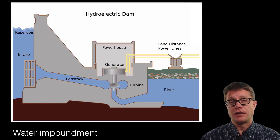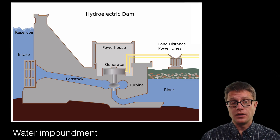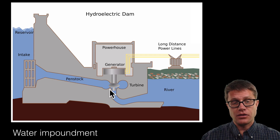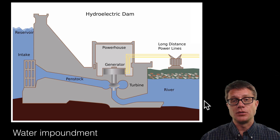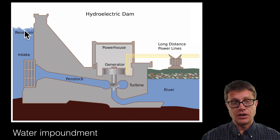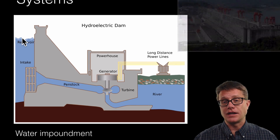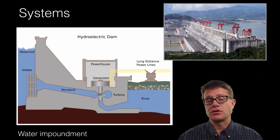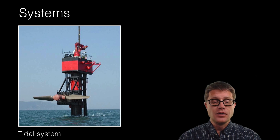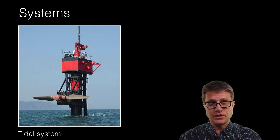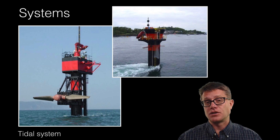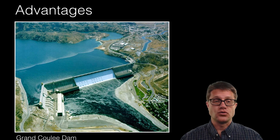In an impoundment system we have a dam — a huge wall with a reservoir behind it holding a large amount of water. As the water is let through, it generates electricity as it moves down to the river. You can see there is a huge amount of potential energy on that side, and if you look at the size of the Three Gorges Dam you can start to imagine how much electricity can actually be generated. We also have tidal systems, where the water moves back and forth as the tides come in and out, and by moving a turbine through that we can generate electricity.